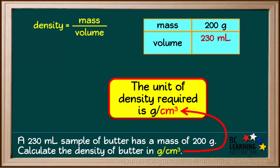However, we notice that they want us to calculate the density in grams per centimeter cubed, or grams per cubic centimeter. So the unit we use for volume needs to be cubic centimeters.